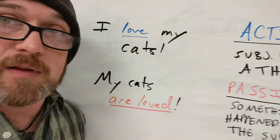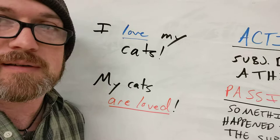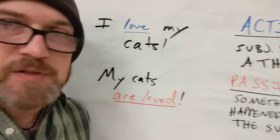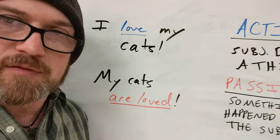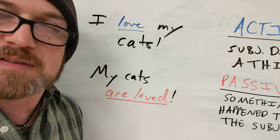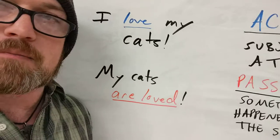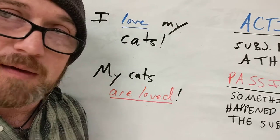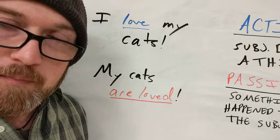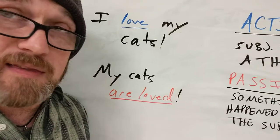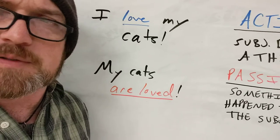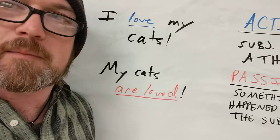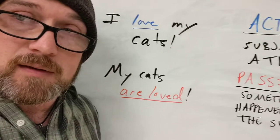The sentence on top says 'I love my cats' — it's a simple active sentence. I am the subject, I am doing a thing, I am loving a direct object: my cats. Now if you look at the sentence below that, I'm expressing the same sentiment, but I've flipped it around so that my cats are the subject. Instead of talking about them doing something, I'm talking about something happening to them: 'My cats are loved.' The subject is my cats, but they're not doing anything. It's passive because something is happening to them.